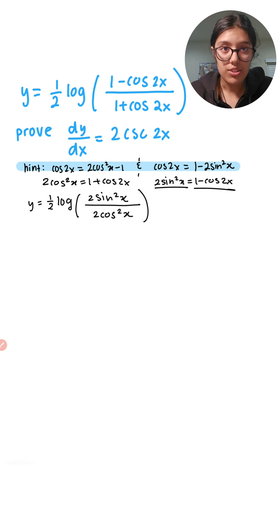We can cancel out the twos, and we know sin squared x over cos squared x is tan squared x. Now I think we have simplified enough, so let's actually start taking the derivative.